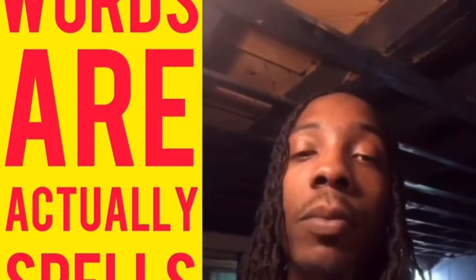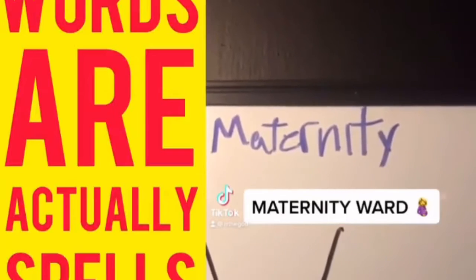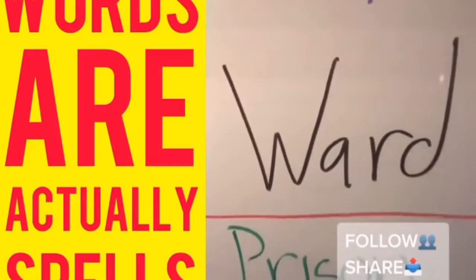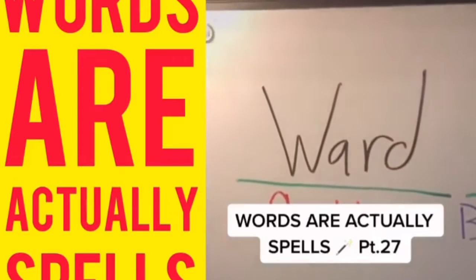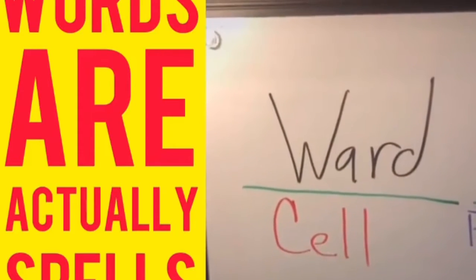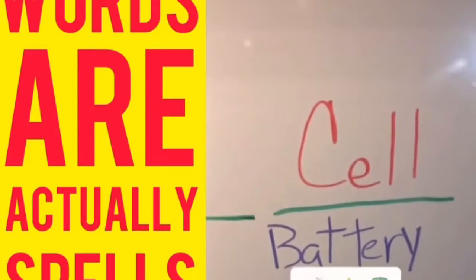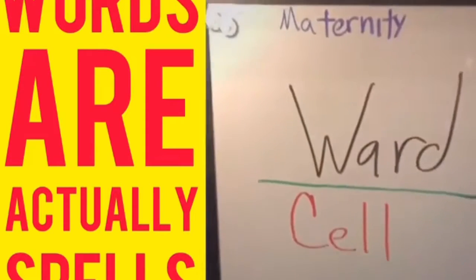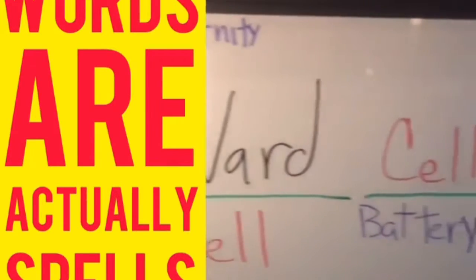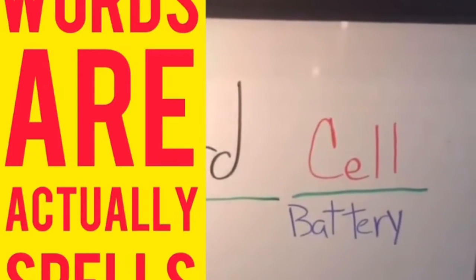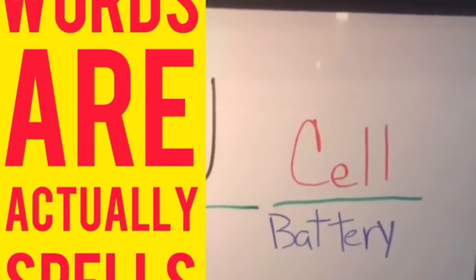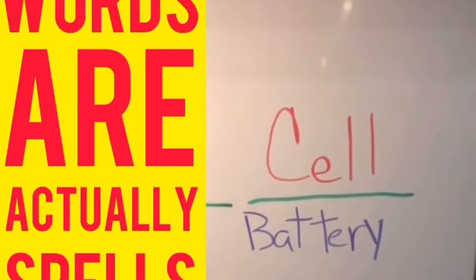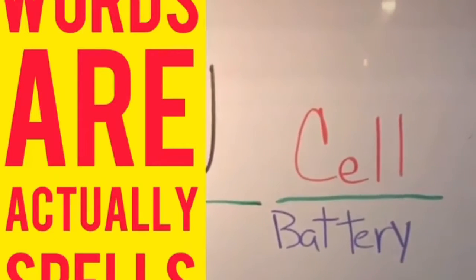The process of delivering is called the birthing process, and words are actually spells. When babies are born, they are taken to the maternity floor. A ward is a section of a prison — another word for a ward is a cell. Cells are in batteries and convert chemical energy into electrical energy. So a maternity floor is a cell used to prepare babies to become batteries for the working class. They make prisoners in jail batteries too, by making them work for free.